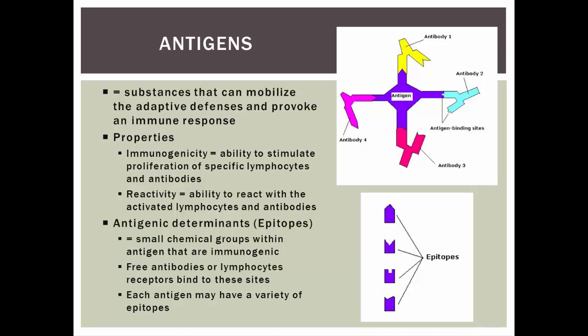Some antigens are so large and complex that they may actually have several what are called epitopes or antigenic determinants on them. These are small chemical groups where the antigen binds with some component of the immune system. Here are epitopes on this blue molecule or antigen — this molecule shows four different epitopes or antigenic determinants, and each one of those is causing immune responses. Here's an antibody that's reacting with it.